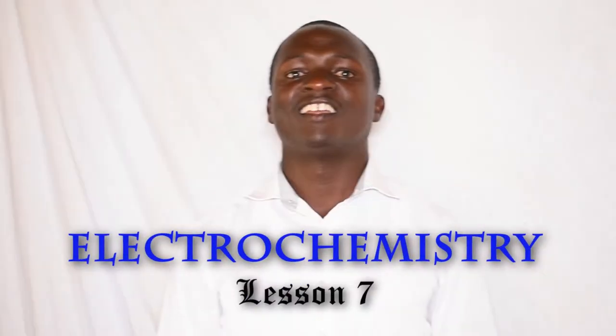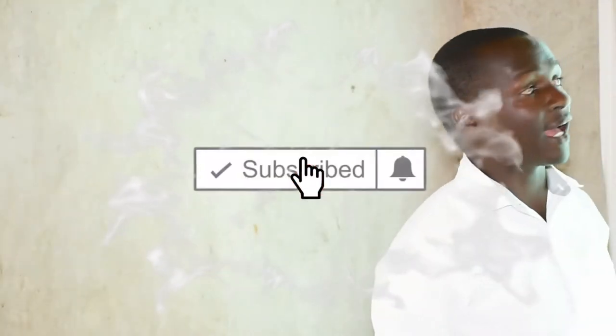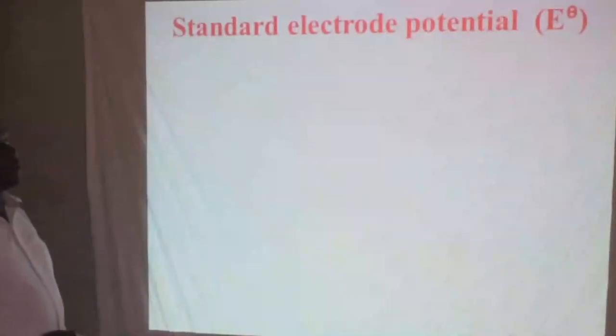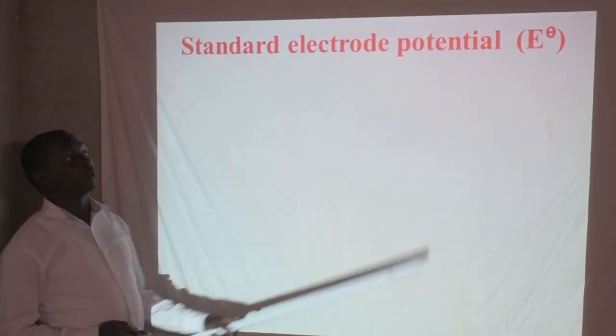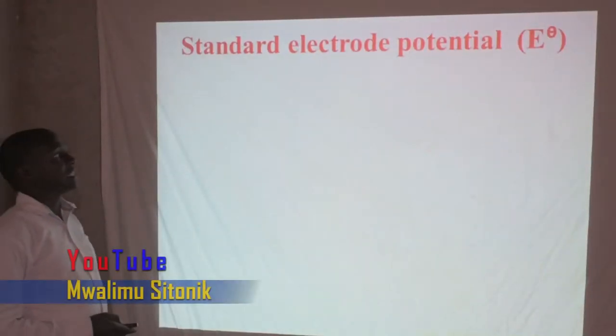Hello viewer, welcome to our chemistry presentation. Today we are going to go to lesson 7 in electrochemistry. Welcome and stay with us for our presentation. Today we are going to advance on what we learned last time. We are going to look at electrochemistry, which is based on standard electrode potential. The symbol for standard electrode potential is E-naught, called E-naught.